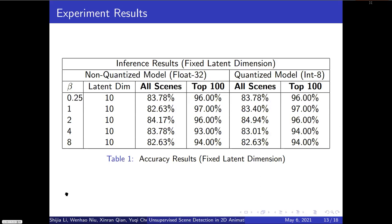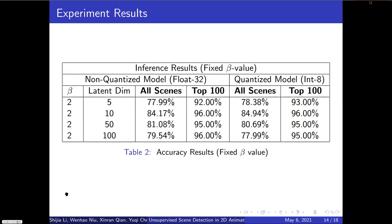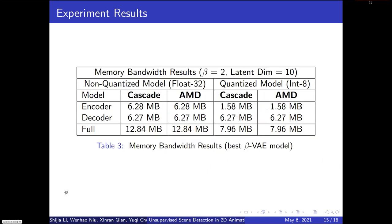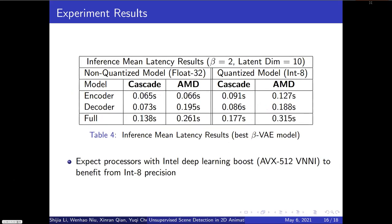The results indicate that when beta equals 2 and latent dimension equals 10, the model outperforms all others in terms of accuracy across all scene changes and the top 100 KL divergence values. Additionally, the quantized model has similar accuracy to the non-quantized model. We also observed that quantization from Float32 to Int8 can significantly reduce the model size in memory, with the most reduction happening in the encoder. For inference latency, the Int8 models are slightly slower than the Float32 models due to hardware constraints.